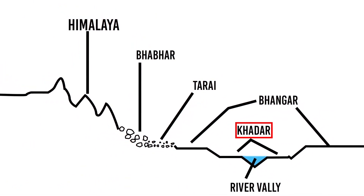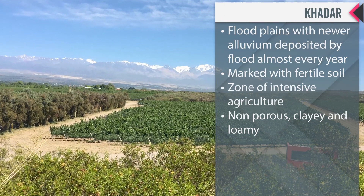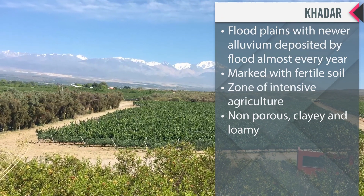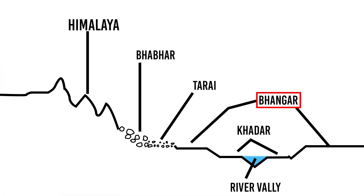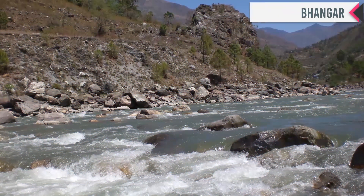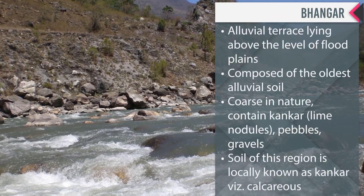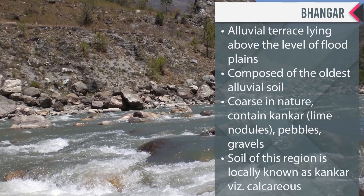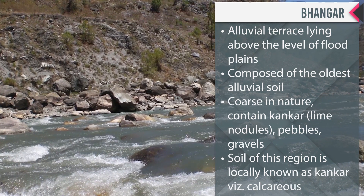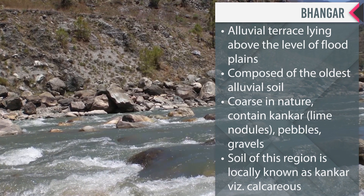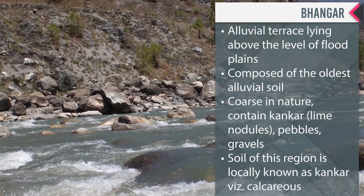Khadar refers to flood plains with newer alluvium deposited by floods almost every year. It is marked with fertile soil and is a zone of intensive agriculture. Khadar soil is non-porous, clayey, and loamy. Bangar is an alluvial terrace lying above the level of flood plains, composed of the oldest alluvial soil. The Bangar region contains kankar — that is, lime nodules, pebbles, and gravels — and the soil is locally known as kankar, referring to calcareous concretions.